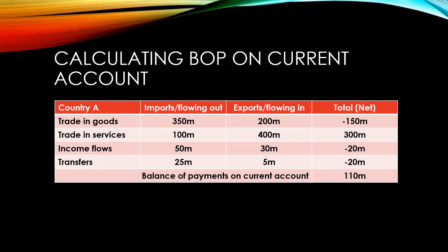When it comes to income flows, there's more money going out to foreign investors with investments in country A than there is money coming in from investments that people in country A have in the rest of the world — a net loss of 20 million. When it comes to transfers, country A is giving out 25 million but only receiving back 5 million, a net deficit of 20 million. Overall, the balance of payments on current account, adding them all together, is a positive 110 million for country A.